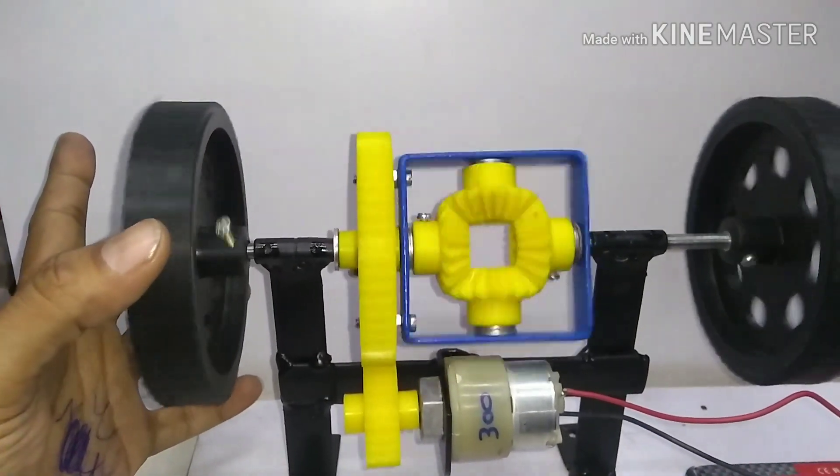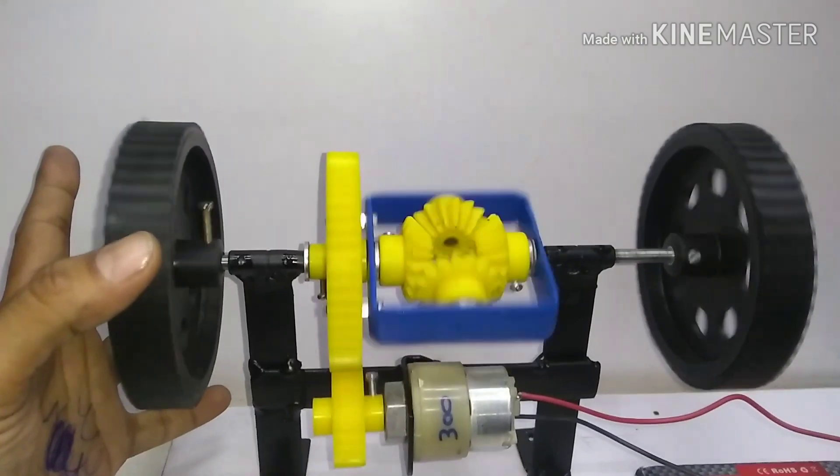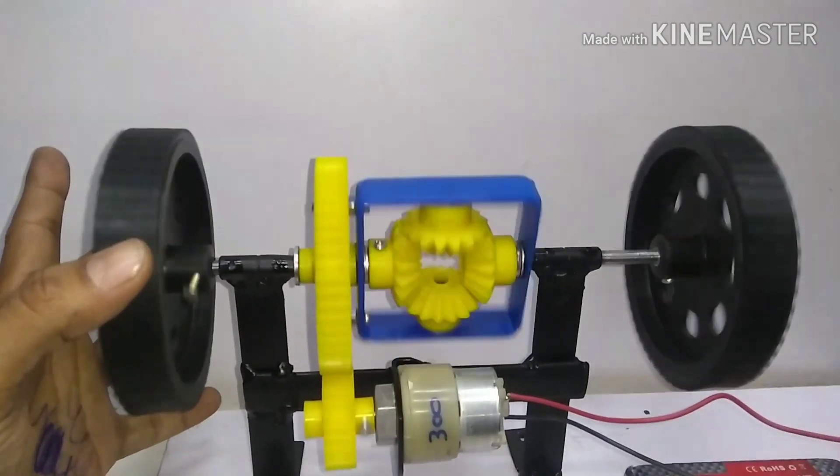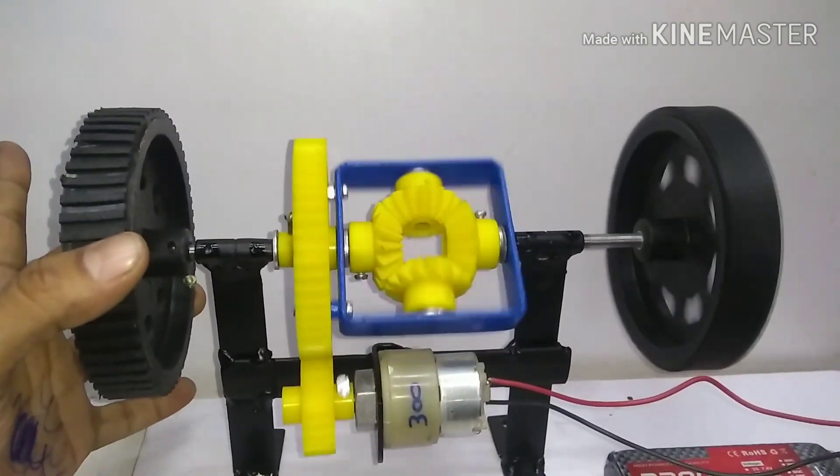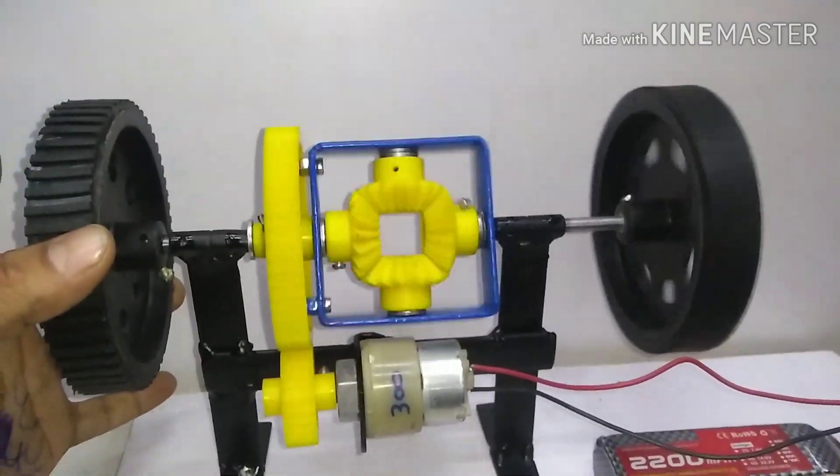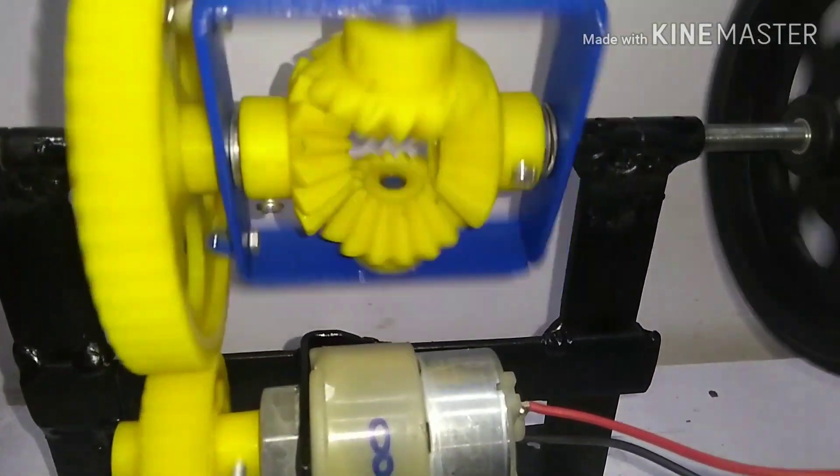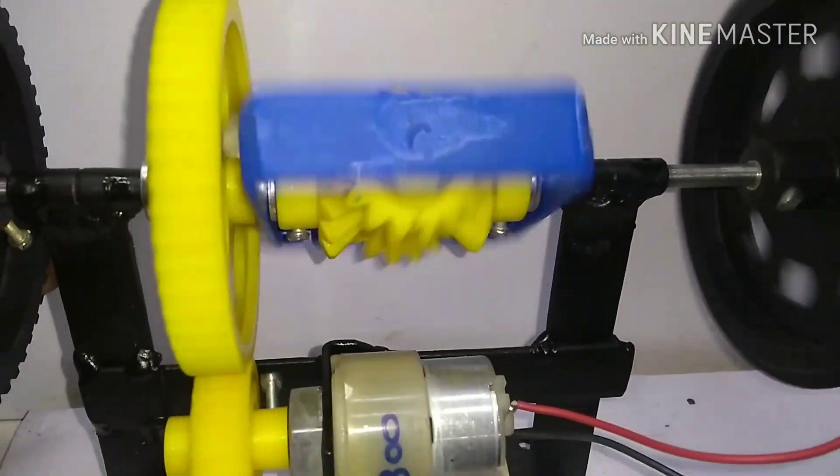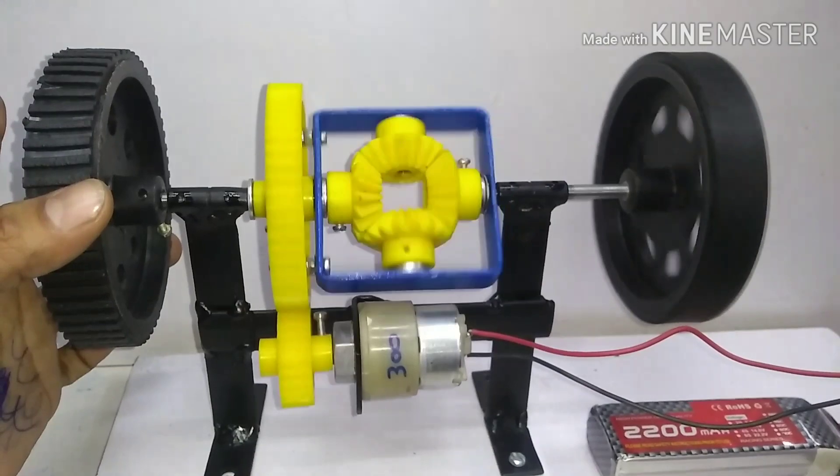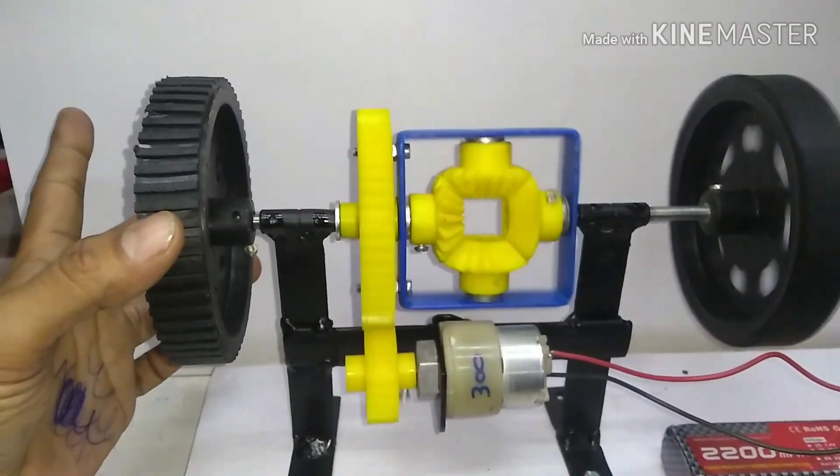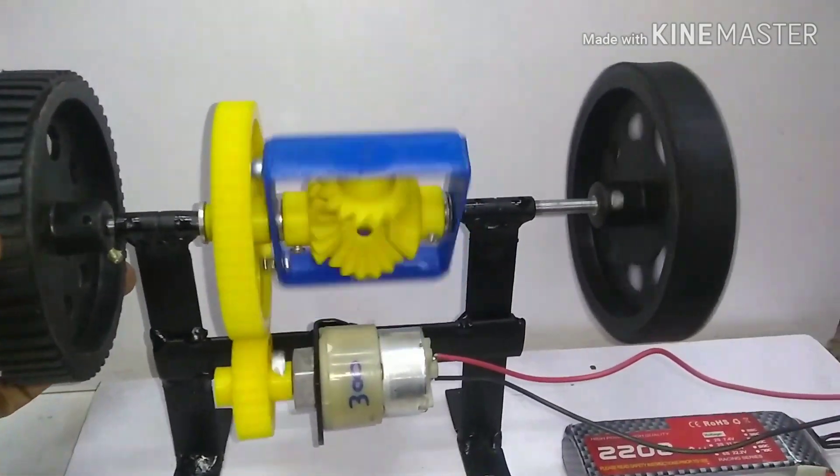...see, suppose if I stop one wheel, the engine doesn't stall. It keeps on transferring the power to the other wheel. See, the shaft has stopped. So long as the wheel is stuck, all the power will be going to the other wheel.